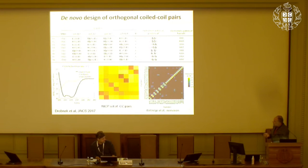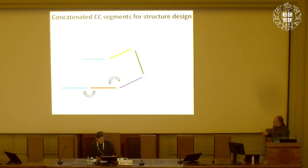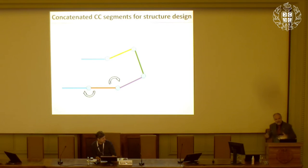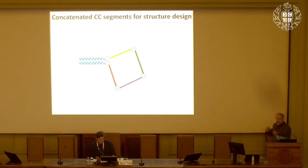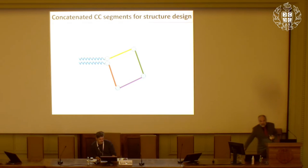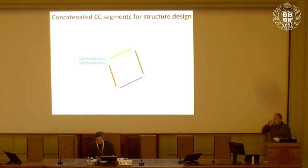The basic idea is to concatenate those building blocks together in a single long polypeptide chain. If two segments are complementary in a defined orientation, they will form a coiled-coil dimer, which forms part of the scaffold of the final structure we want to build.